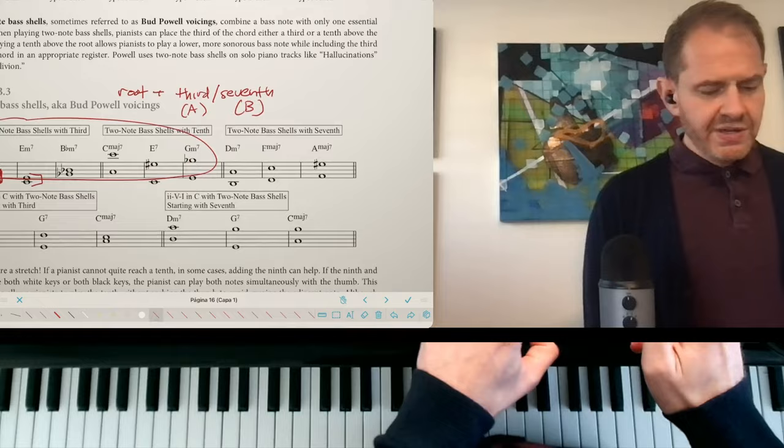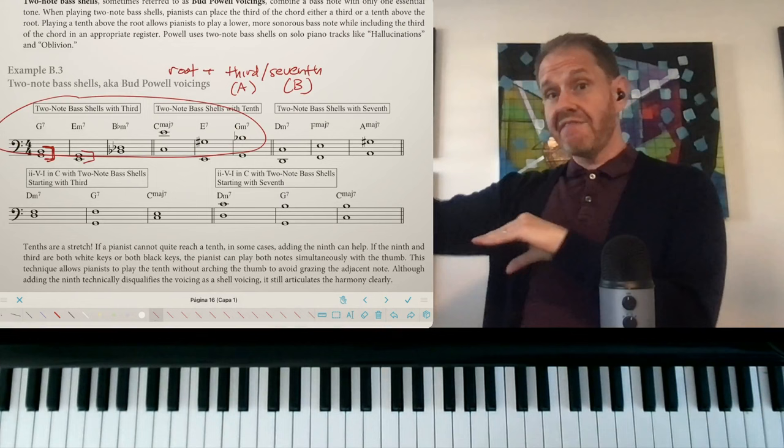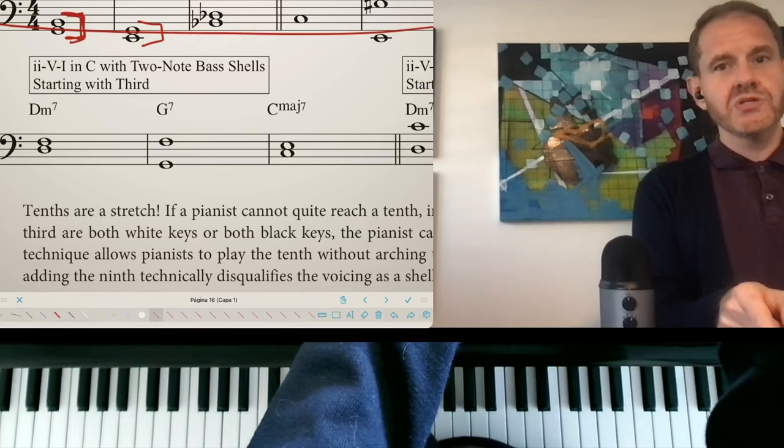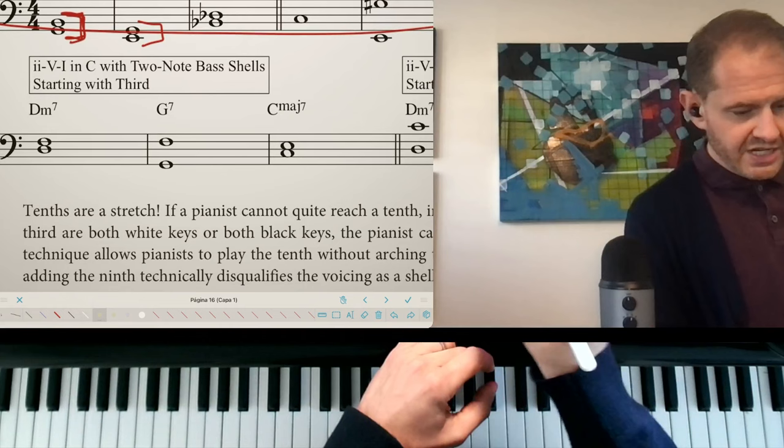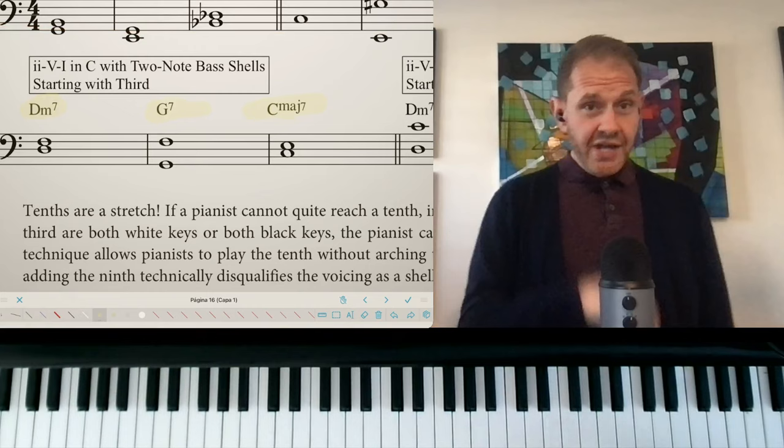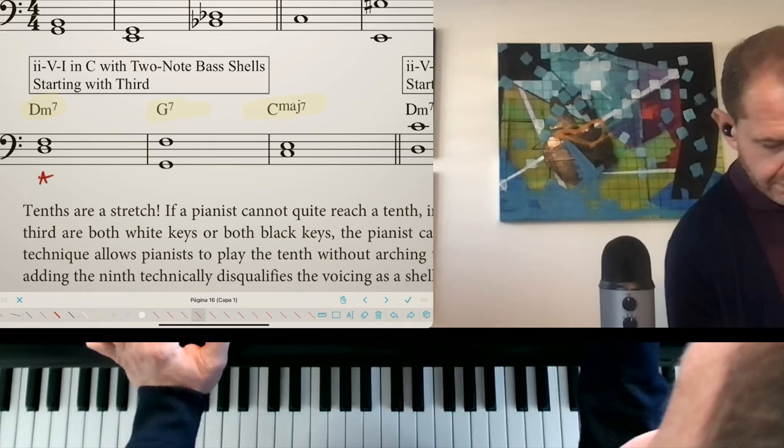So these are going to be your main two formulas, the root plus the third, type A, the root plus the seventh, type B. Now, whenever we have chords moving in the circle of fifths, which includes a 2-5-1 progression, D to G to C is moving in the circle of fifths, what we want to do is alternate between type A and B voicings. So this is A, B, A. This is root third. D is the root. F is the third. This is root seventh. G is the root of G7. F is the seventh of G7. C is the root. E is the third.